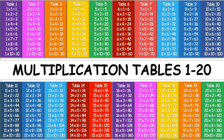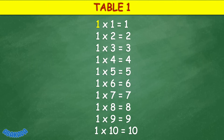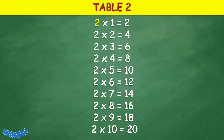Abacada Multiplication Tables 1 to 20. Table 1: 1 times 1 equals 1, 1 times 2 equals 2, 1 times 3 equals 3, 1 times 4 equals 4, 1 times 5 equals 5, 1 times 6 equals 6, 1 times 7 equals 7, 1 times 8 equals 8, 1 times 9 equals 9, 1 times 10 equals 10.